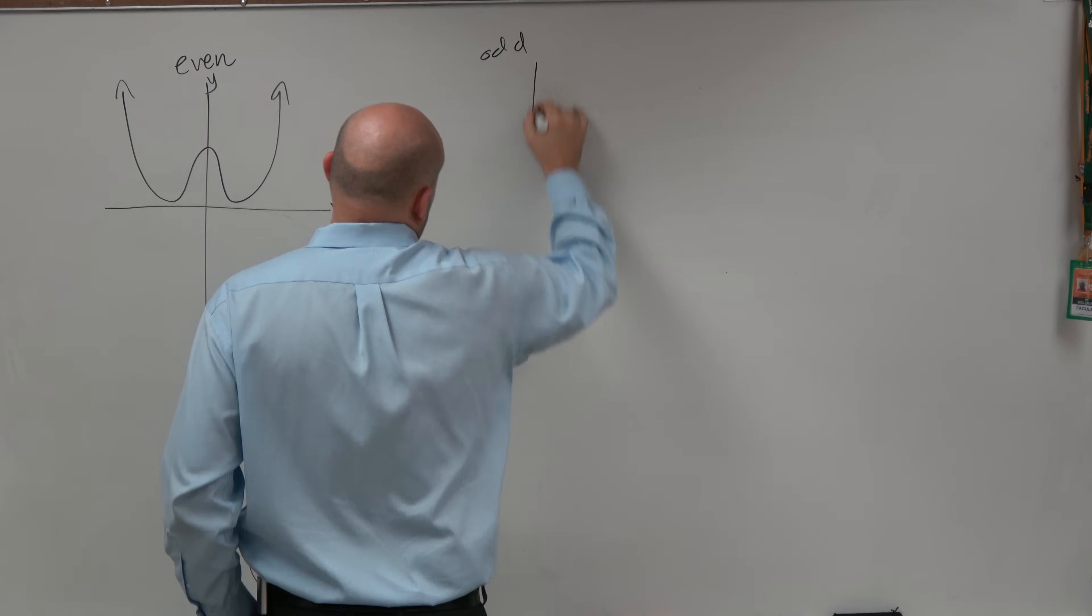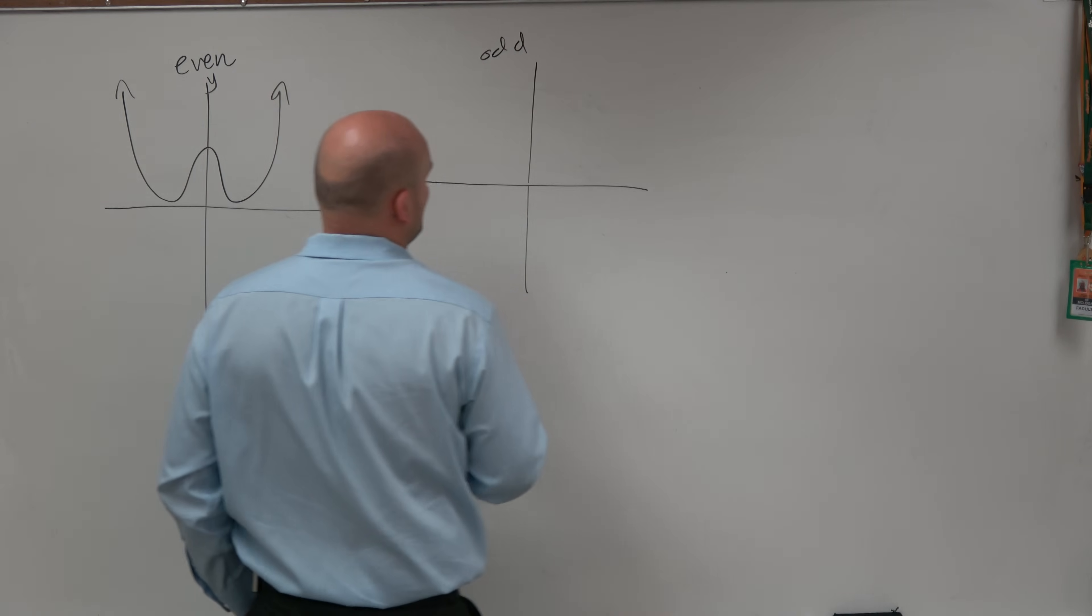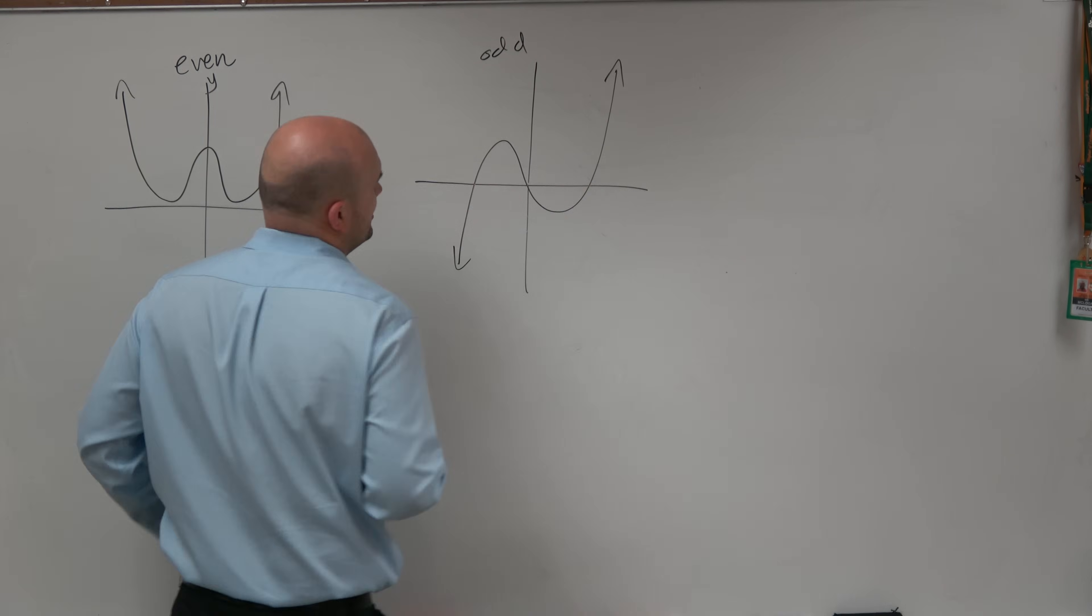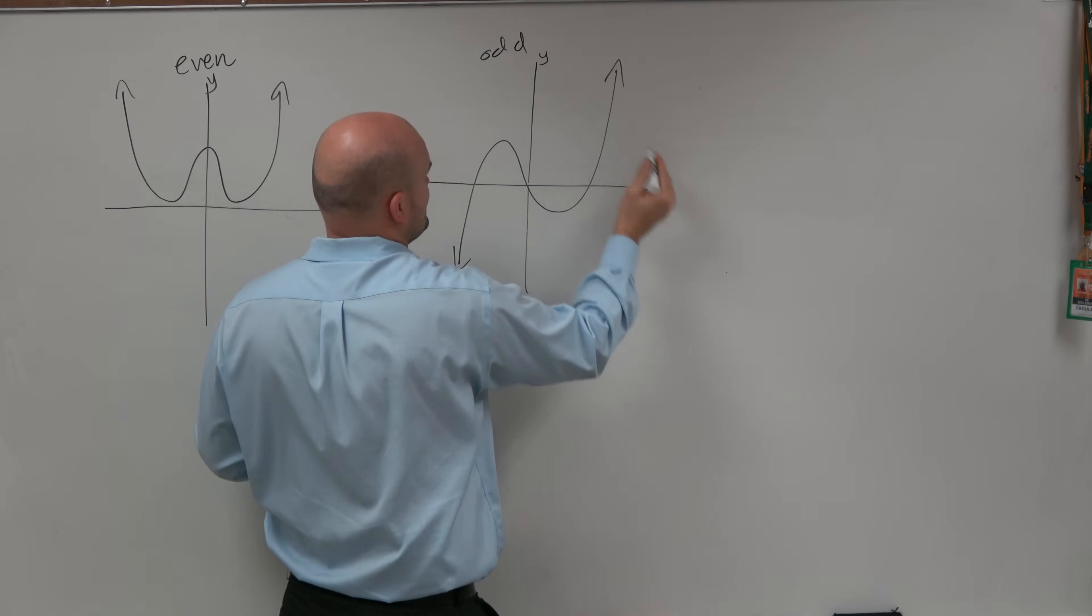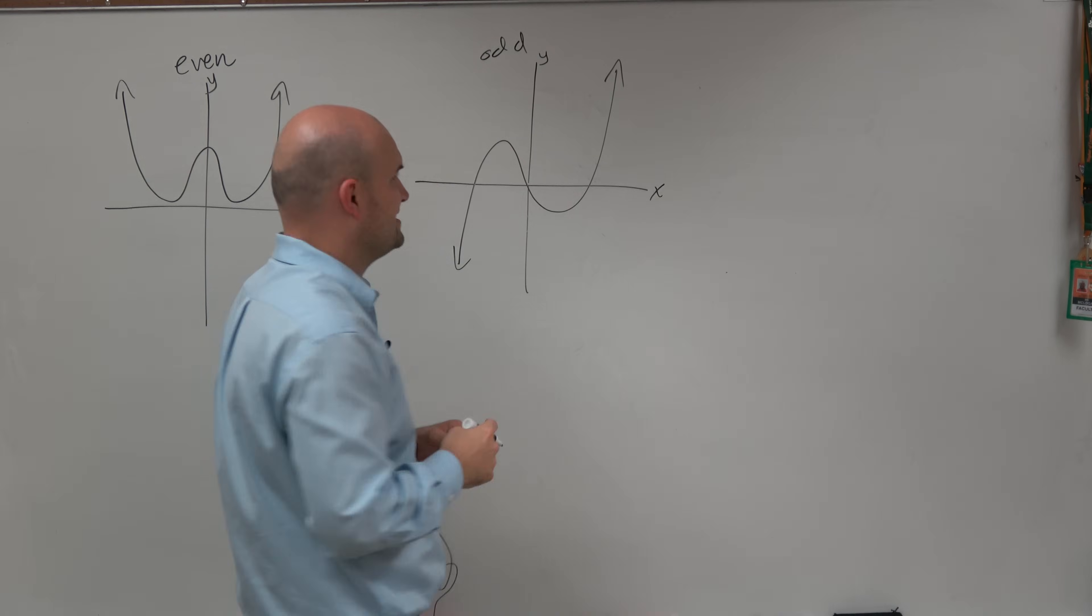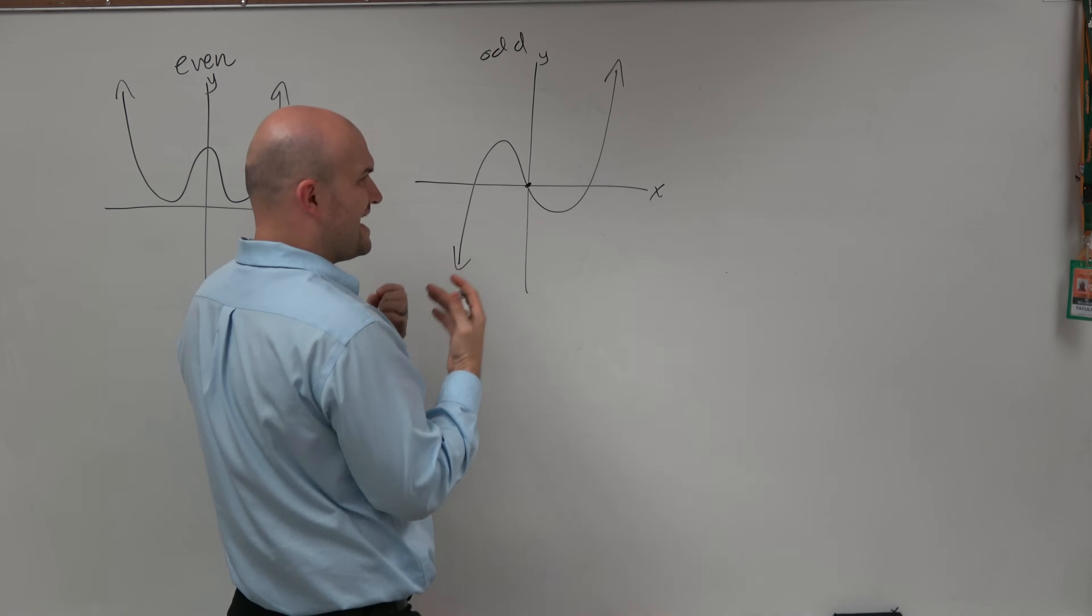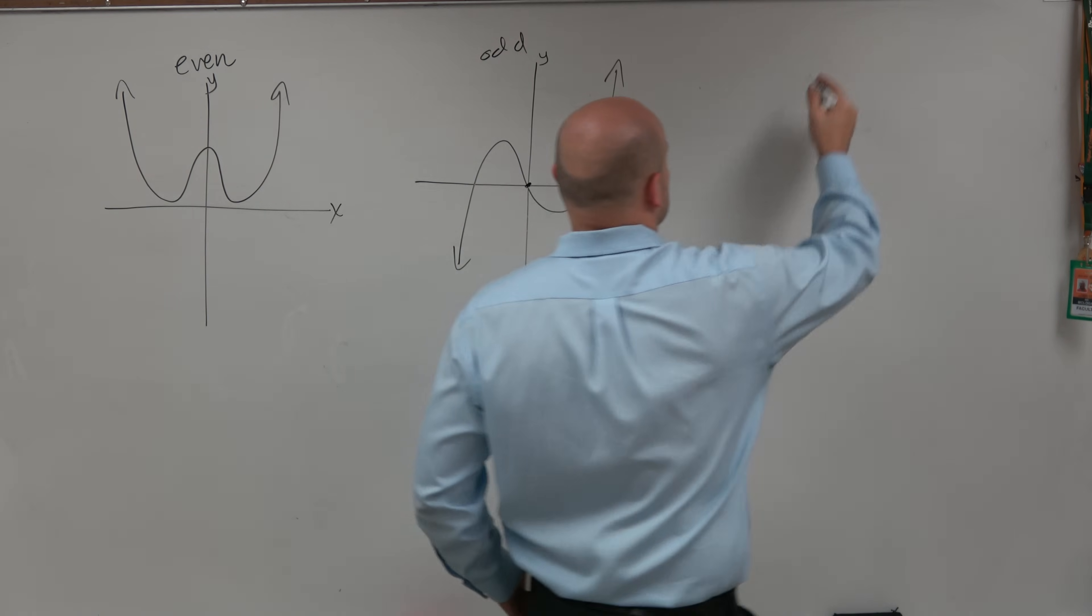Odd functions are going to be ones that are symmetrical about the origin. And basically, another way to think about symmetrical about the origin is if you reflect them about the y-axis, as well as reflect them about the x-axis, you're going to get the exact same graph. These points, if you were to reflect this about the y-axis and then reflect it one more time about the x-axis, you should have the exact same graph.